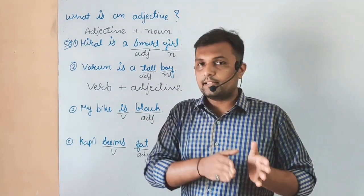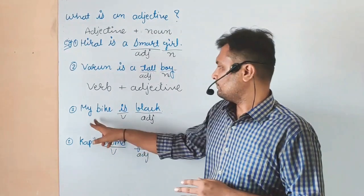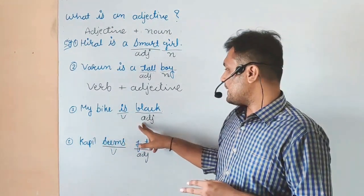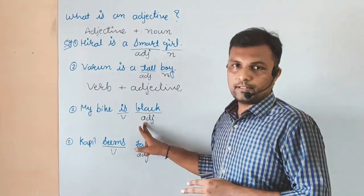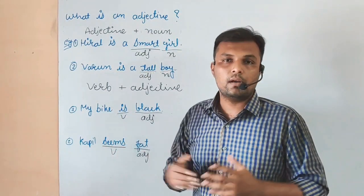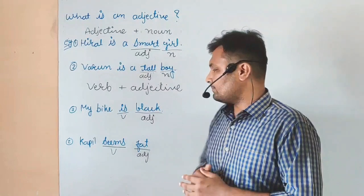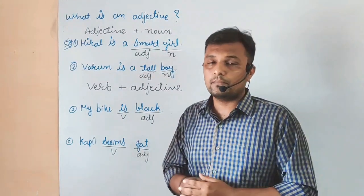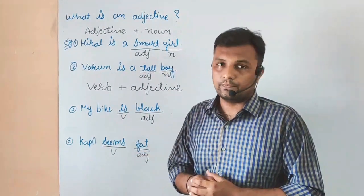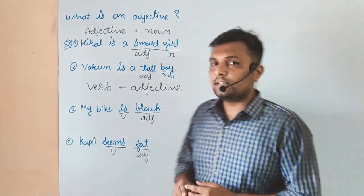But sometimes adjectives come after a verb also. My bike is black - black is our adjective. Kapil seems fat - seems is our verb and fat is our adjective.